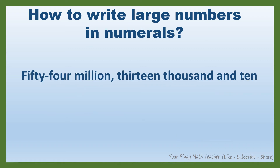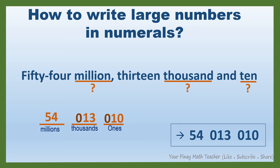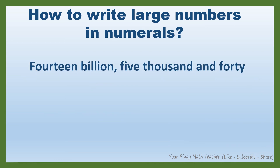How about this? 54,013,010. In this number, the highest period is the millions period, so we have three groups of digits. As you can see, we need to add zero before 13 and zero before 10. So, this is the numeral for 54,013,010.